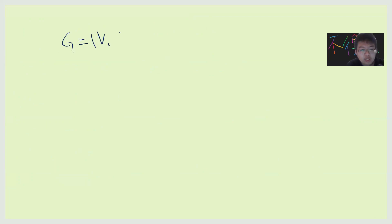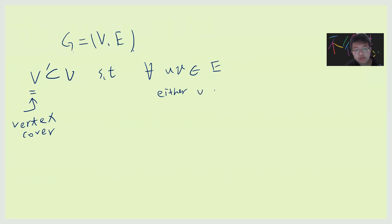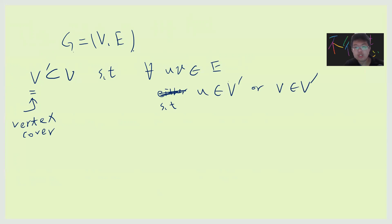Vertex cover means you try to cover some vertices. Somebody gives you a graph G = (V, E), and you want to find V' which is a subset of V — this is called a vertex cover — such that for each edge (u, v) belonging to E, either u belongs to V' or v belongs to V'. Basically you want to take some points such that each edge touches at least one of the points you choose.